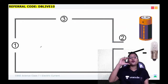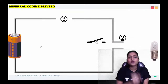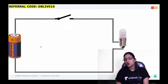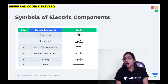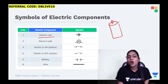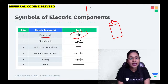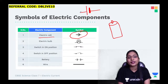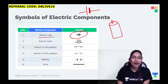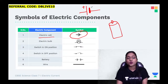Instead of drawing the full electric cell or electric bulb, we use symbols to simplify the diagram. As you can see on screen, there are different symbols for different components. For the electric cell, instead of drawing the full cell, we use a longer thinner line and a shorter thicker line, both connected to wires. The longer thinner line shows the positive terminal and the shorter thicker line shows the negative terminal.